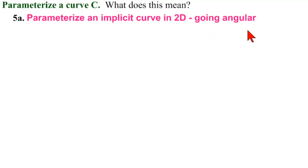Notice it doesn't say going polar, it says going angular. And not to repeat myself a hundred times too late, a curve needs one parameter.